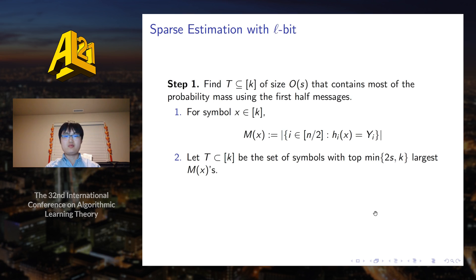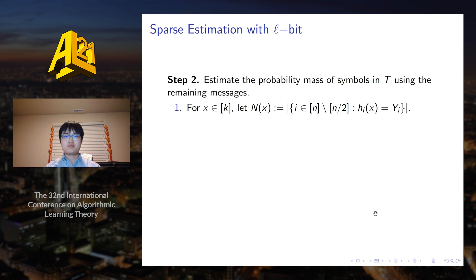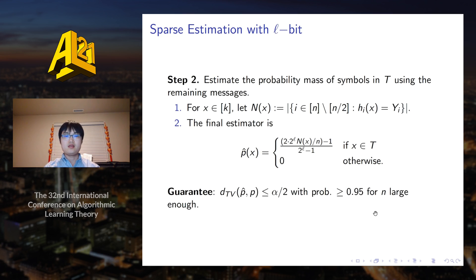We can guarantee that with high probability, the set that we have chosen contains pretty much most of the probability mass. In the second stage, we compute a count very similar to the first step for only the remaining set of messages. Once we have obtained the count, we naturally obtain an empirical estimate of the probability of yi equals hi of x, and then simply invert the affine function to obtain an estimate of p of x. The estimated probabilities are close enough so that we end up with an estimator with the desired success probability and accuracy.